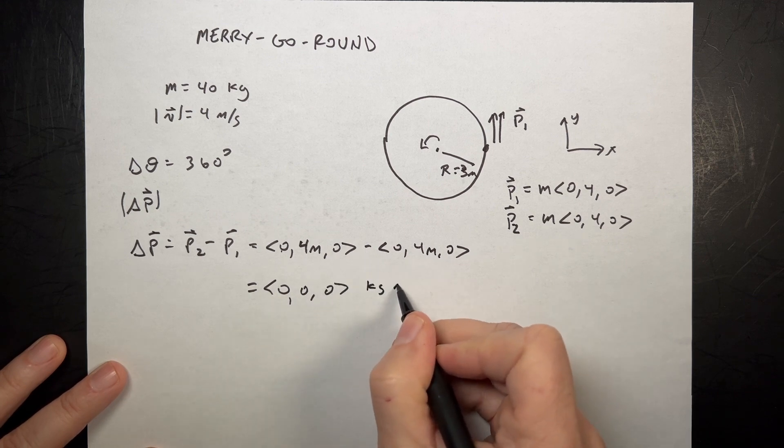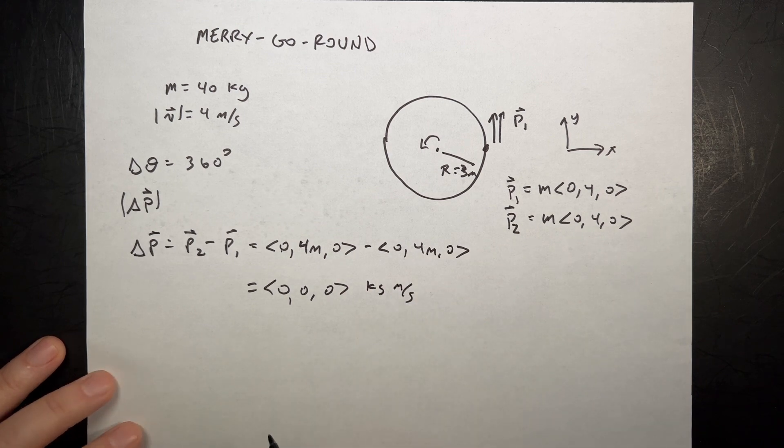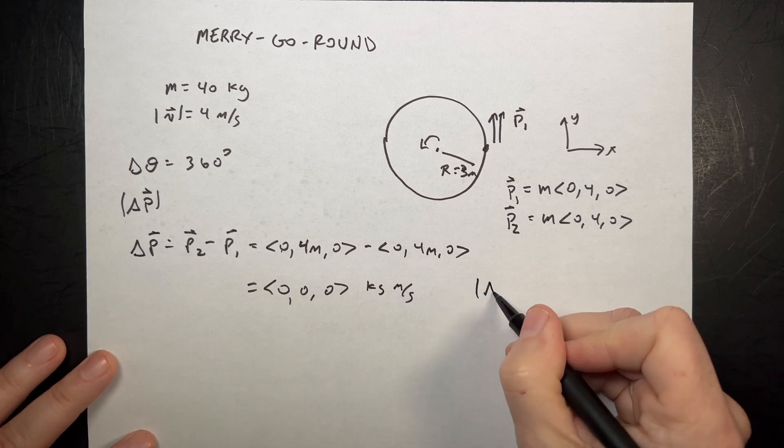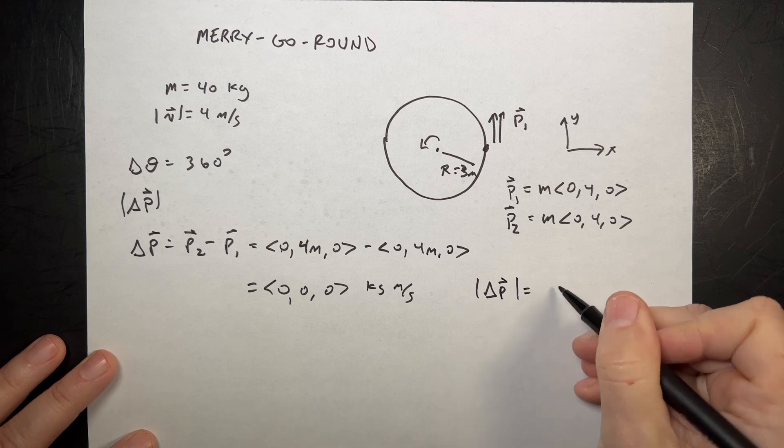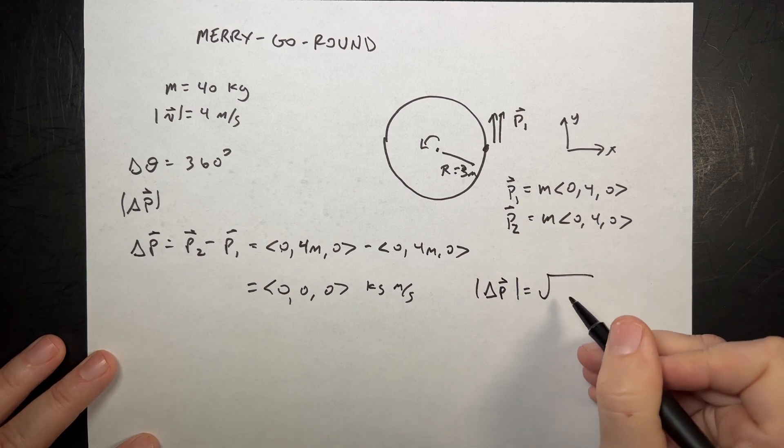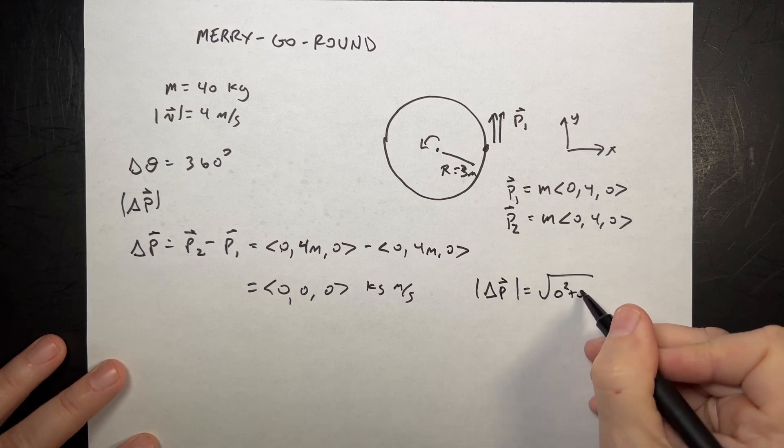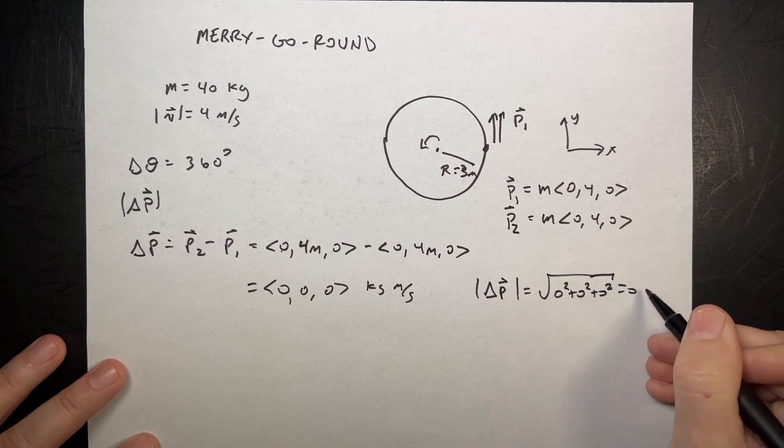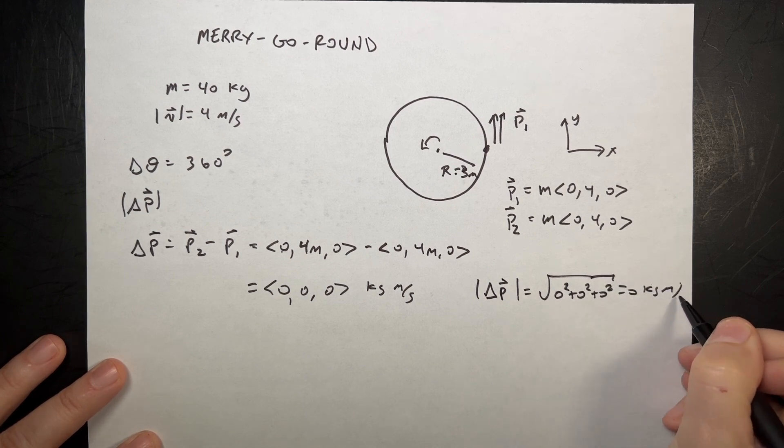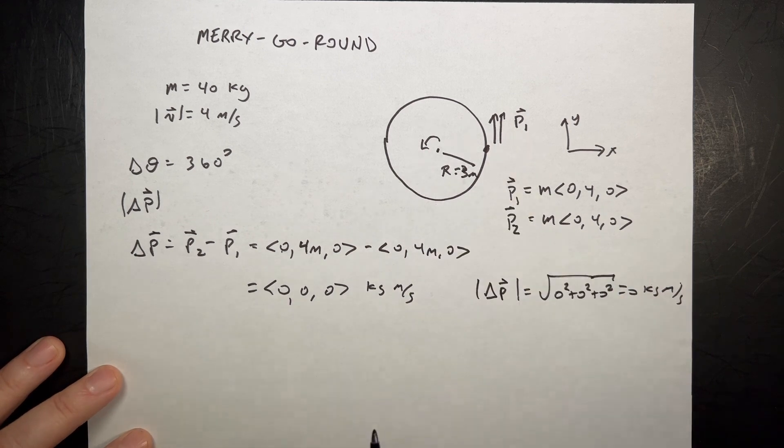So this is 0 kilogram meters per second. Now I need to take the magnitude. So the magnitude of delta P is going to be the square root, I know this is silly, but I'm doing it anyway. 0 squared plus 0 squared plus 0 squared equals 0 kilogram meters per second. So the change in momentum going all the way around is 0 kilogram meters per second.